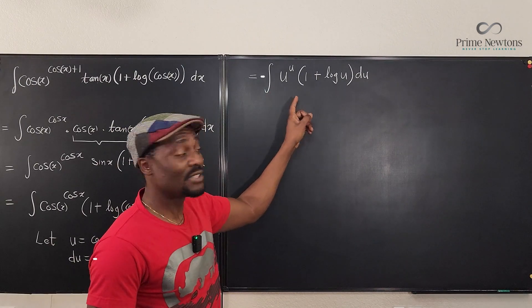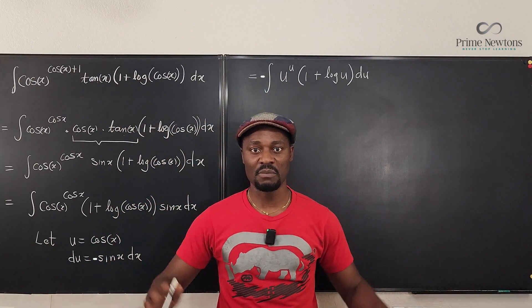But this is the derivative of this. So by the way, the answer is u to the u, where your u is cosine x plus c. That's it.